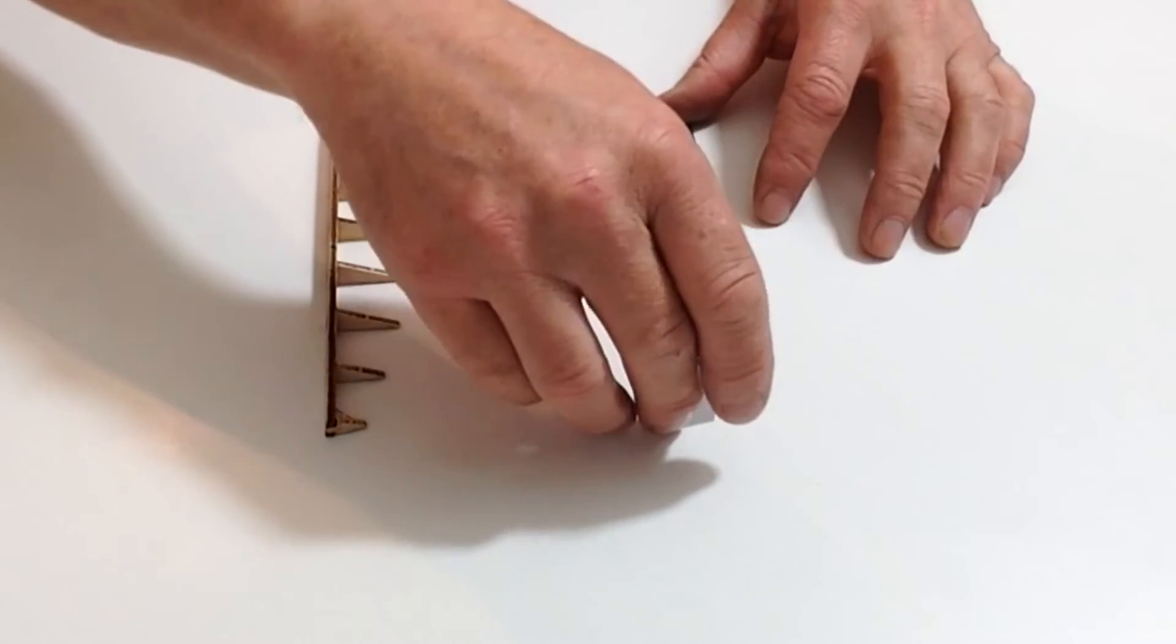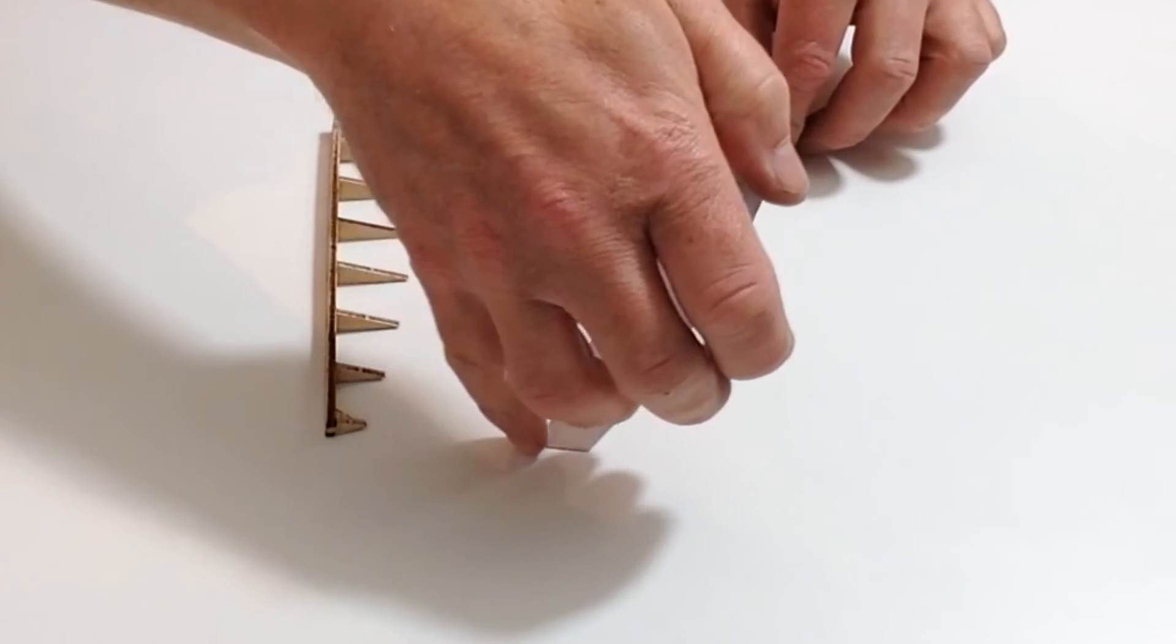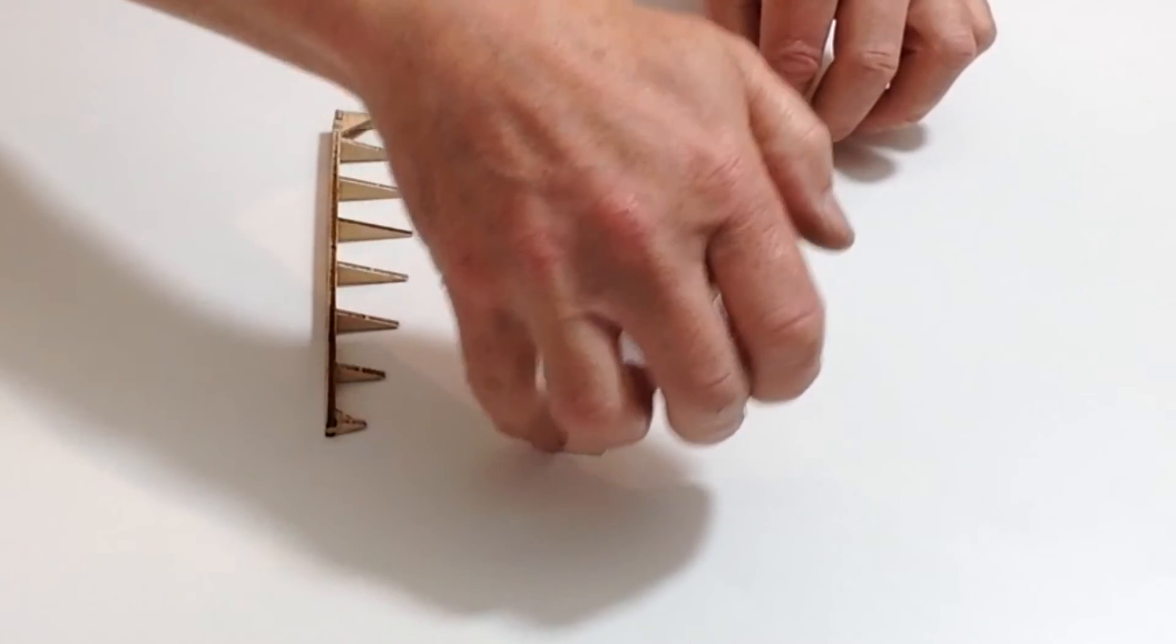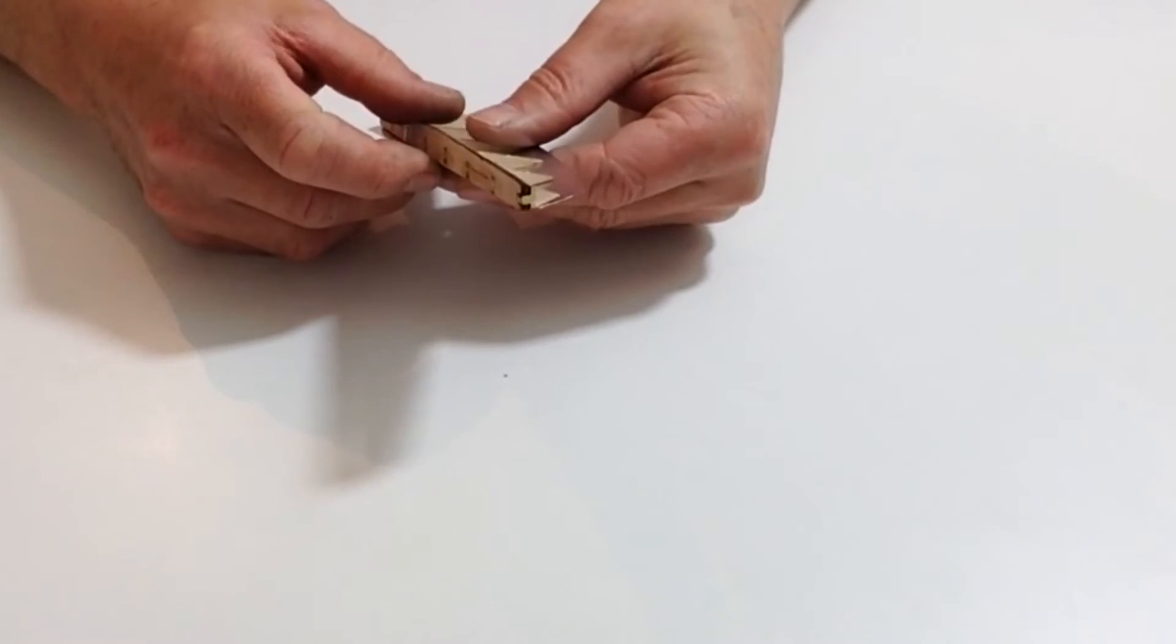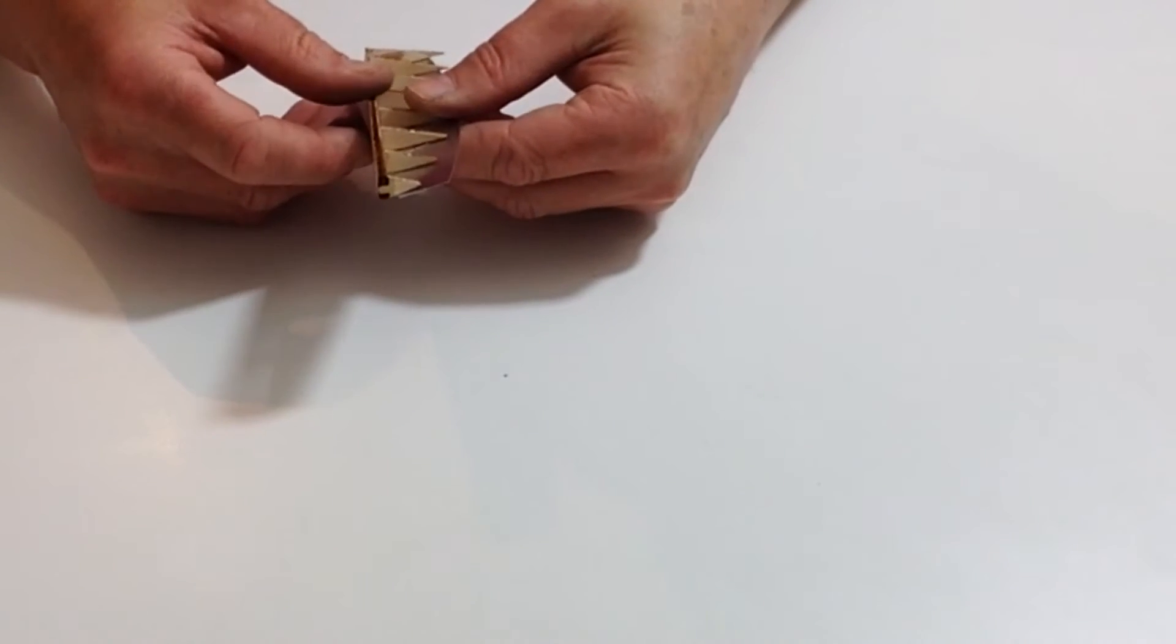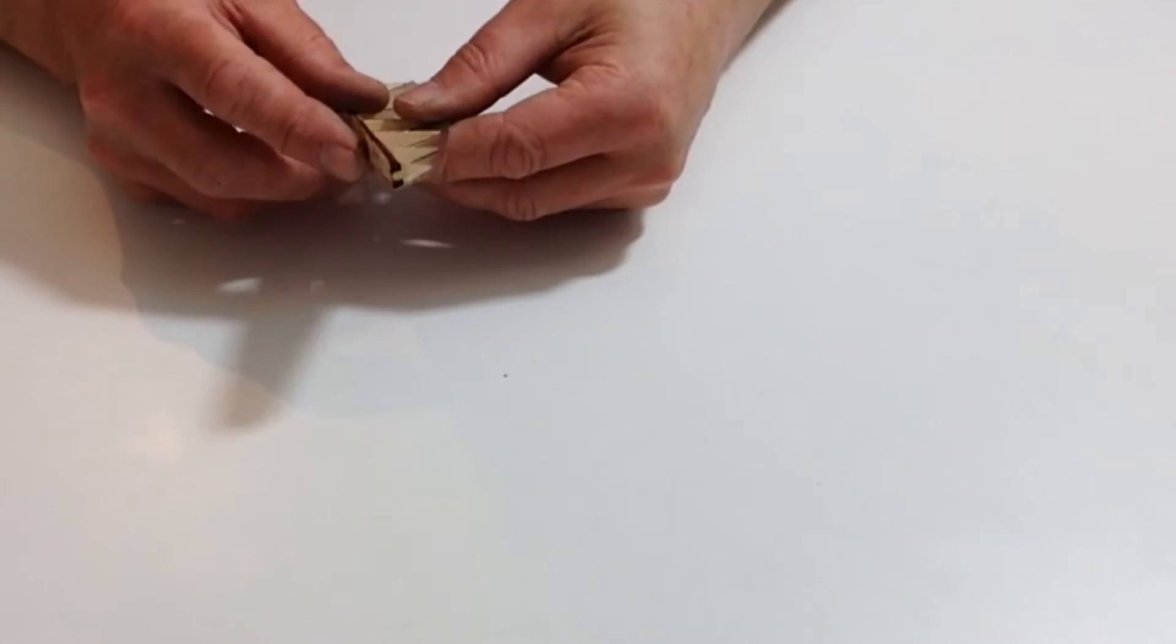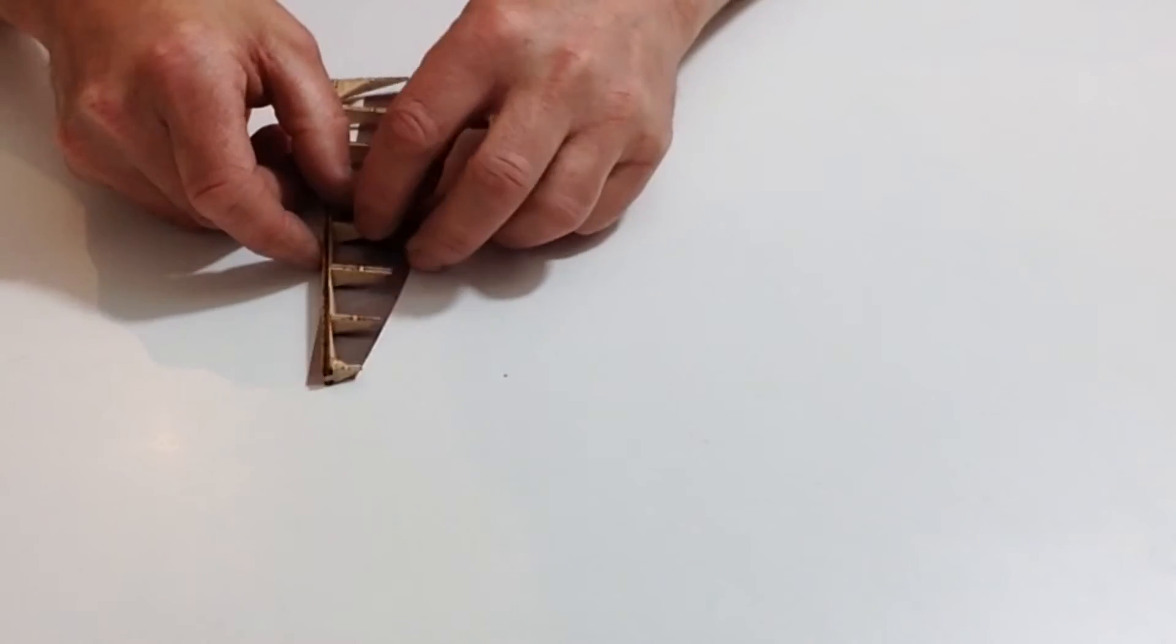Glue the plate 14 onto the aileron and allow that to dry. Once you've done that, take plate 31 from stage 82, gluing that onto the top, exactly the same as what we did with the previous aileron.